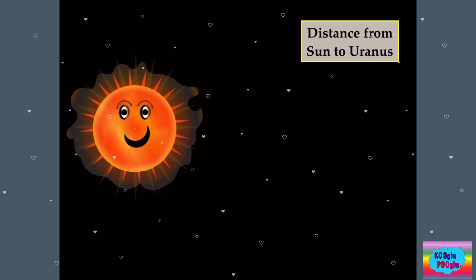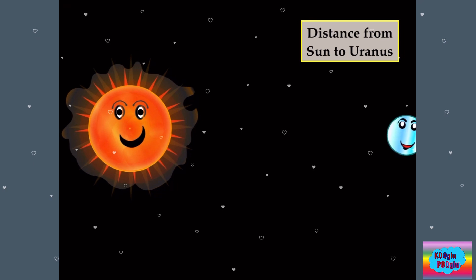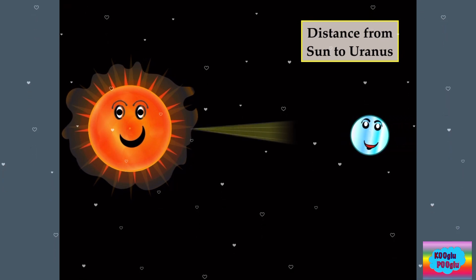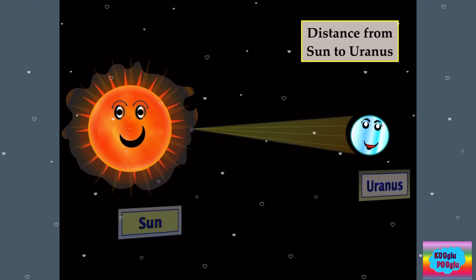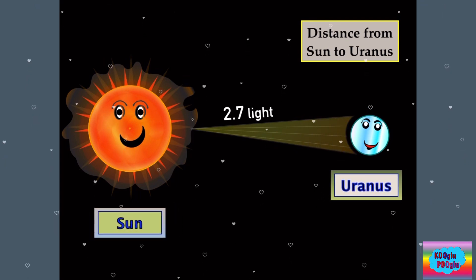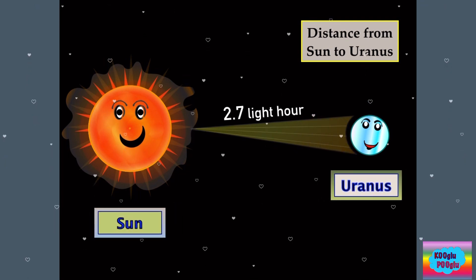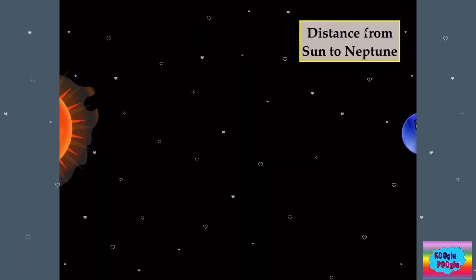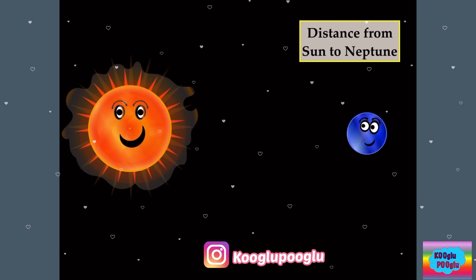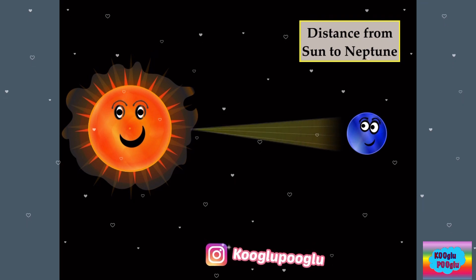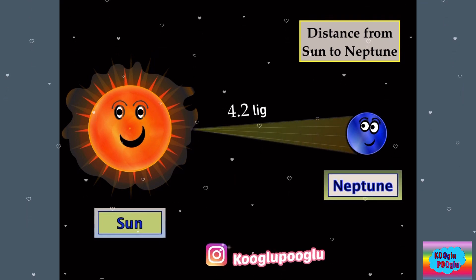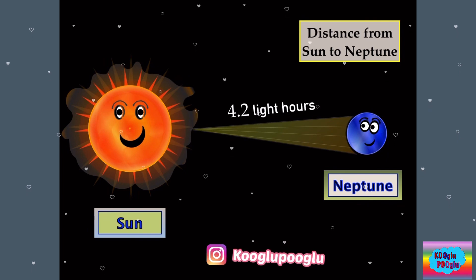Then we got the distance from the sun to Uranus — it is 2.7 light hours. And then we have the most distant planet from our sun, Neptune, which is 4.2 light hours away.